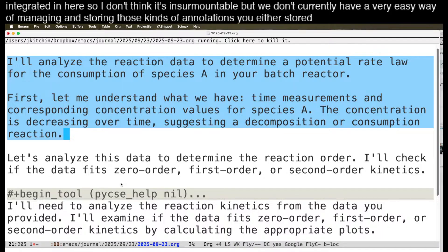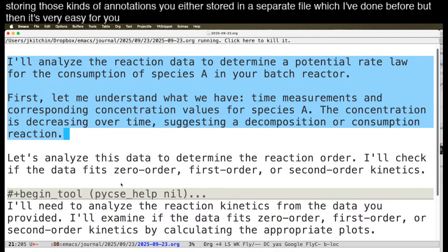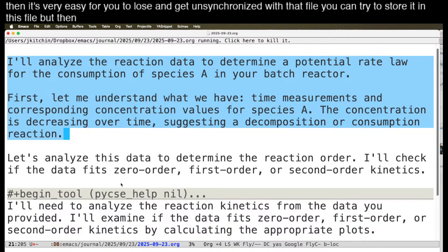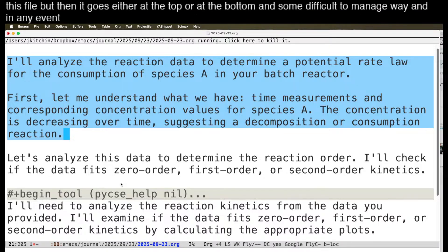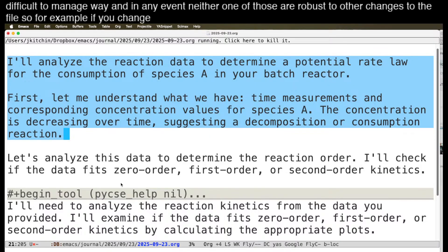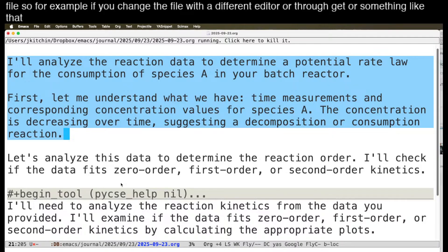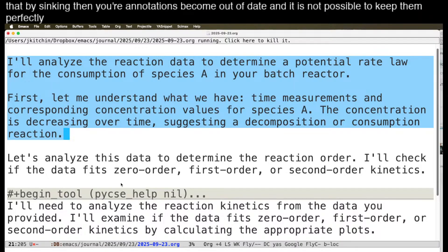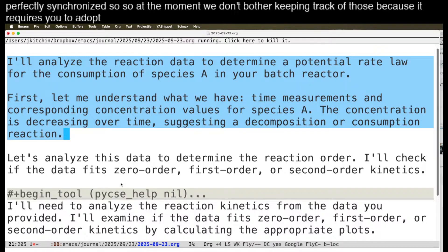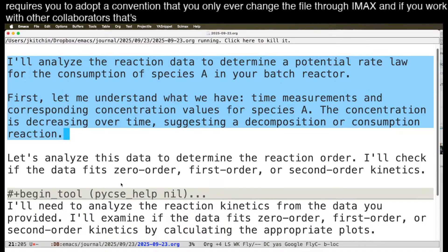So I don't think it's insurmountable but we don't currently have a very easy way of managing and storing those kinds of annotations. You either store it in a separate file which I've done before but then it's very easy for you to lose and get unsynchronized with that file. You can try to store it in this file but then it goes either at the top or at the bottom in some difficult to manage way and in any event neither one of those are robust to other changes to the file. So for example if you change the file with a different editor or through git or something like that by syncing then your annotations become out of date and it is not possible to keep them perfectly synchronized.